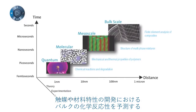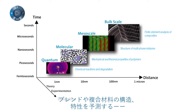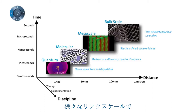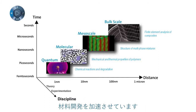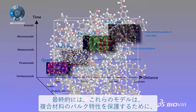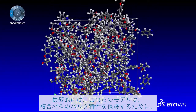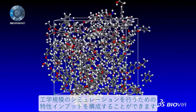Materials development is accelerated by the use of simulation methods at a range of length scales, from the atomistic and molecular scale in order to predict bulk chemical reactivity in the development of catalysts and material properties, to more coarse grain simulation of mixtures to predict the structure and properties of blends and composites. Ultimately, these models can structure property input for engineering scale simulations in order to predict the bulk properties of composites.